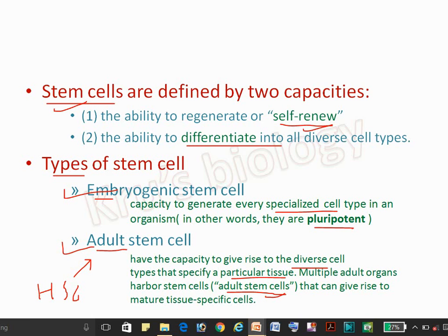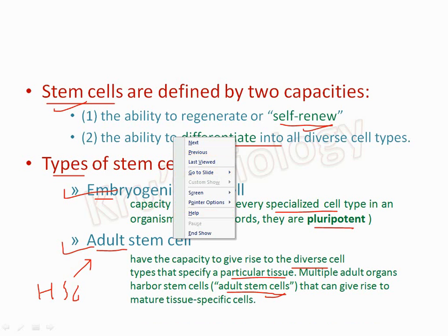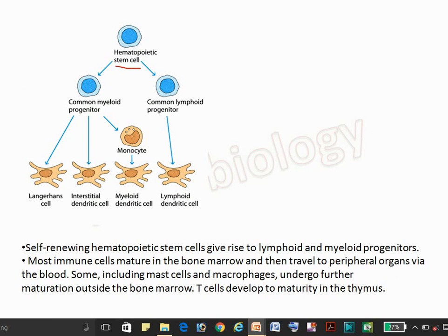Hematopoietic stem cells give rise to various types of cells going to specific lineages. Here you can see that the hematopoietic stem cell divides into either a common myeloid progenitor or a lymphoid progenitor. The lymphoid progenitor further divides into dendritic cells, and the myeloid progenitor divides into various cell types like monocytes, which then give rise to dendritic cells, intestinal dendritic cells, and Langerhans cells. The self-renewal capacity of the hematopoietic stem cell gives rise to both lymphoid and myeloid progenitors.